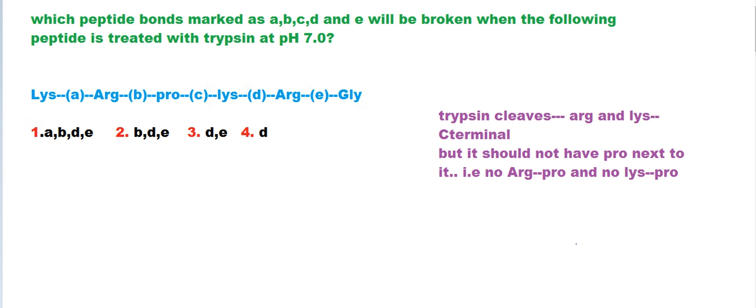Hello friends, you're seeing the question on your screen. This is also a previous year CSIR question asked for two marks. The question says: which peptide bond, marked as A, B, C, D, or E, will be broken when the following peptide is treated with enzyme trypsin at pH 7?